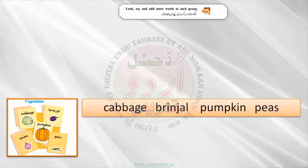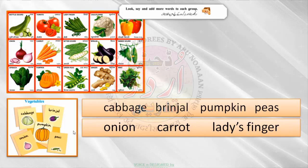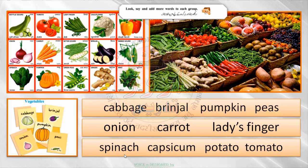The next group is vegetables. In vegetables here we have some examples: cabbage, brinjal, pumpkin, peas. Some more examples we are adding: onion — up to onion it is given in your picture. We are also adding carrot, ladies' finger, spinach, capsicum, potato, tomato.